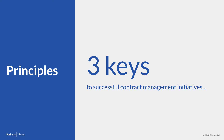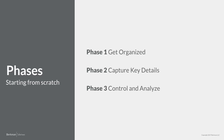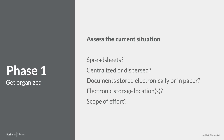With those principles in mind, it's time to start managing contracts. Let's break the challenge down into three phases: one, get organized; two, capture important details; and three, analyze and control our contracts. In phase one, we want to get organized. There are two steps to organize contracts when you do not have any system in place. First, we need to assess the current situation. These questions will help get you started — it's not an exhaustive list, but it will help you look for the data and documents you need to begin this journey.